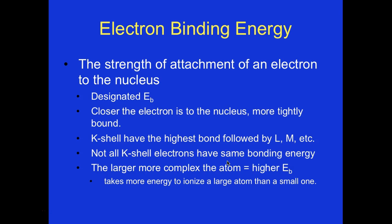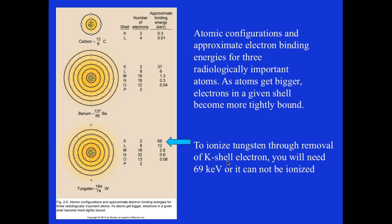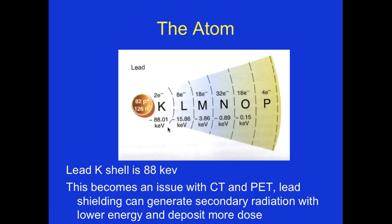K-shells have the highest binding energy, followed by L, M, etc. Not all K-shell electrons have the same binding energy — the larger and more complex the atom, the higher the binding energy, requiring more energy to ionize it. Looking at atomic configurations of approximate electron binding energies for three radiologically important atoms: as the atom gets bigger, electrons in a given shell become more tightly bound. To ionize tungsten through removal of a K-shell electron, you need 69 keV — it cannot be ionized below that. For lead, the K-shell binding energy is 88 keV, which becomes an issue with CT and PET since lead shielding can generate secondary radiation with lower energy and deposit more dose within the patient.